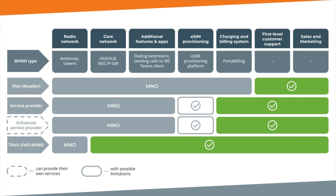The next MVNO type is Enhanced Service Provider MVNO, which is more advanced still. They also have a billing system, but they do not only resell mobile communications — they also provide some of their own services. For example, traditional telco services such as large data allowances or free roaming in foreign countries, bundled with non-mobile services such as music and live event streaming subscriptions.